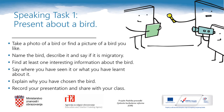The first task in this lesson: take a photo of a bird or find a picture of a bird that you like. Name that bird, describe it, and say if it's a migratory bird. Find at least one interesting piece of information about that bird. You can say where you have seen it and what you have learned about it. Finally, explain why you have chosen that bird. When you are happy with your presentation, record it and share it with your class.